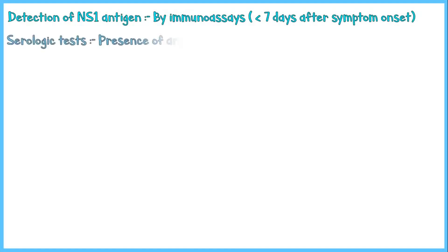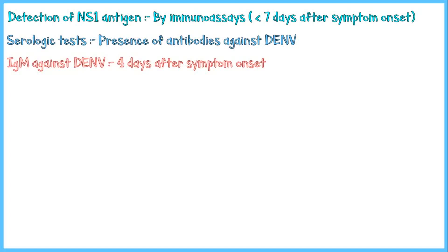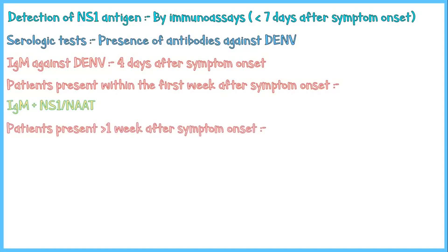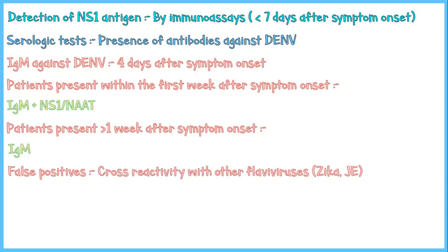Serologic tests can detect antibodies produced against the virus. IgM antibodies present in the blood from 4 days after symptom onset. For patients presenting within the first week, both IgM and NS1 or nucleic acid amplification tests should be done. For patients presenting more than a week after symptom onset, IgM tests should be done. However, serologic tests may give false positive results due to cross-reactivity with other flaviviruses such as Zika virus and Japanese encephalitis. Testing for IgG antibodies is not useful for diagnosing a current infection as they persist for life after dengue infection.